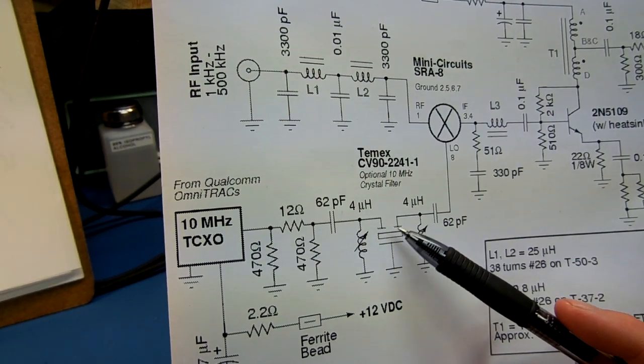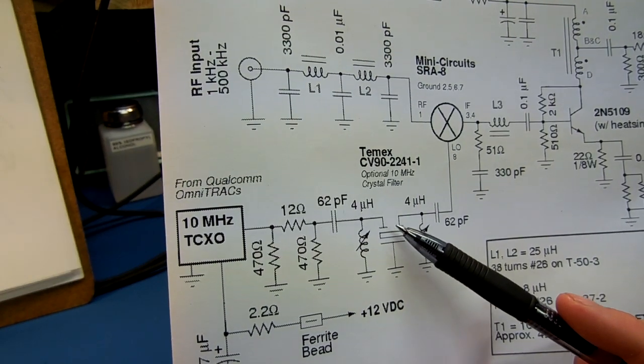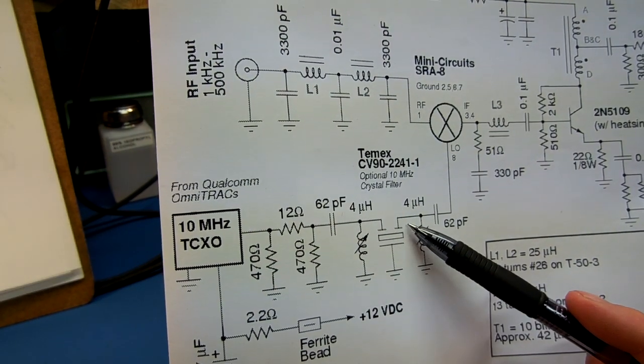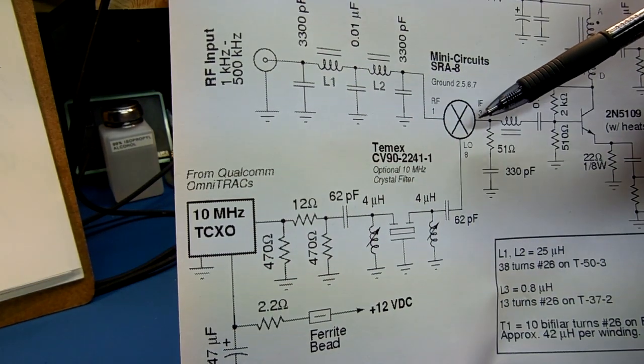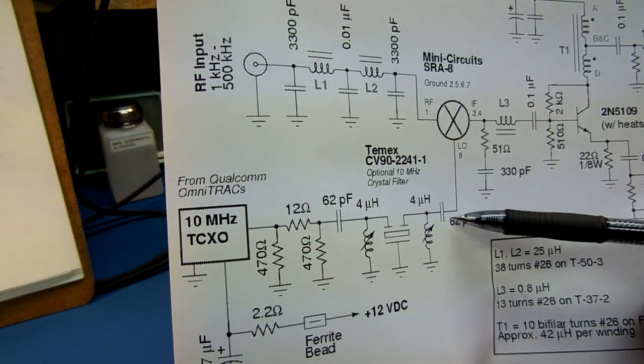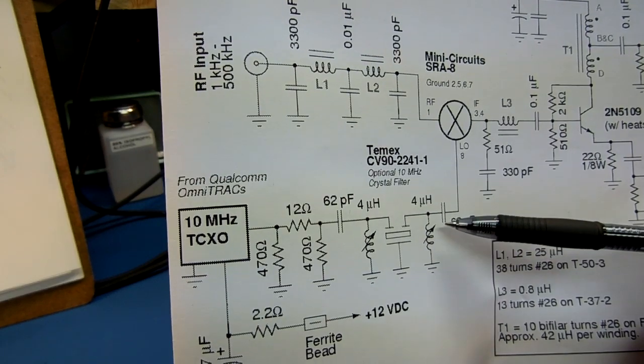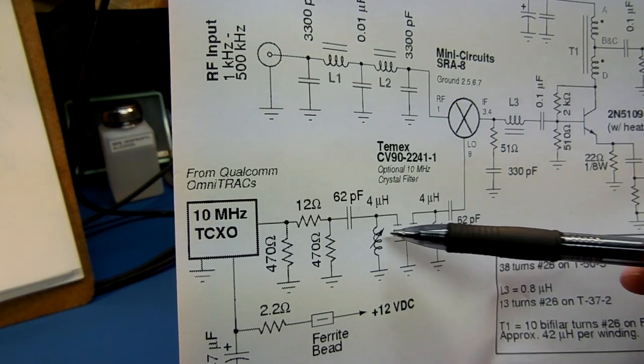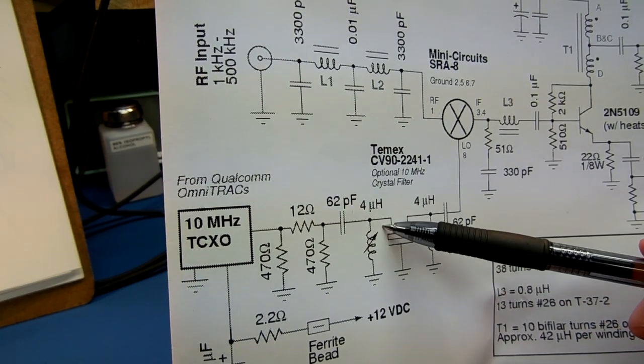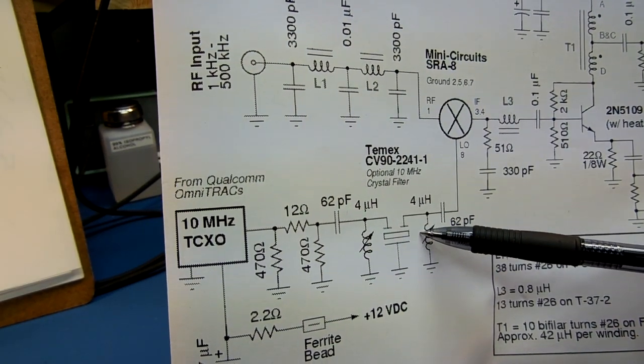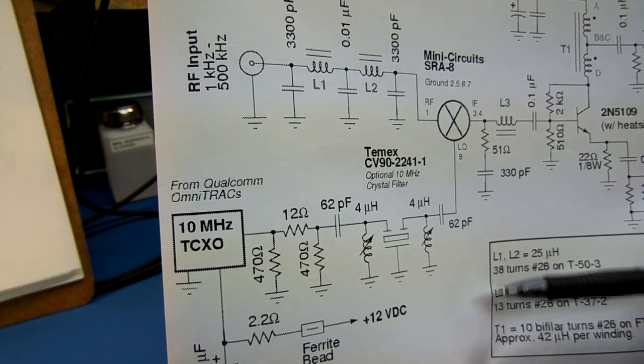These crystal filters have a 3000 ohms impedance. And the TCXO and the mixer have a 50 ohm impedance. So I'm using a little two component L matching network to convert the 50 ohms up to 3000 ohms, 3000 ohms down to 50 ohms. And it feeds the local oscillator port.